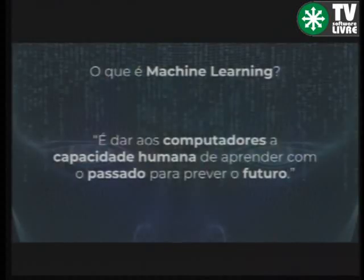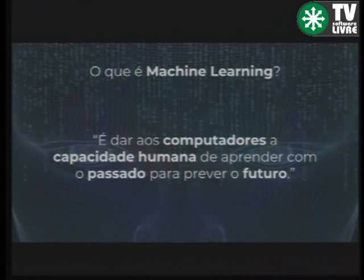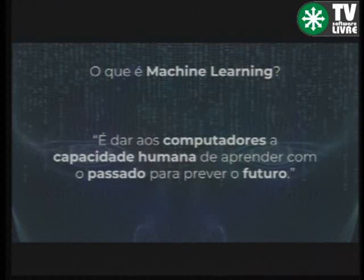Em uma frase, o que é Machine Learning? O Machine Learning, a partir de um conhecimento já estabelecido, de um dataset consolidado, dá a capacidade da máquina aprender com o passado e tentar prever o futuro. Dá a habilidade para o computador de aprender com o passado para tentar prever o futuro. Essa é a melhor definição que eu encontrei.